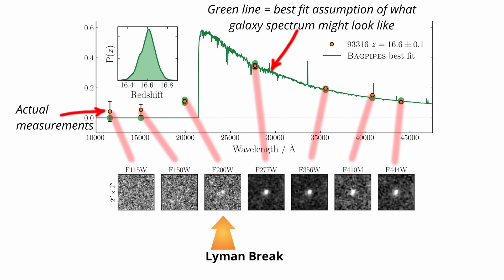So astronomers fall back on photometry. Instead of a spectrum, Webb takes deep images through broad filters. If a galaxy vanishes in one filter but appears in the next, that dropout marks the Lyman break. It's quick, powerful, and it's how the redshift 25 candidates were found.